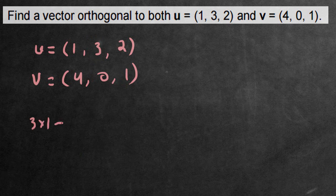then we're gonna subtract, then we're gonna cross multiply it to the other ones, the 2 and the 0. So subtract the 2 times 0. Then you're gonna put a comma. This here is the first coordinate of the orthogonal vector that we're trying to find.